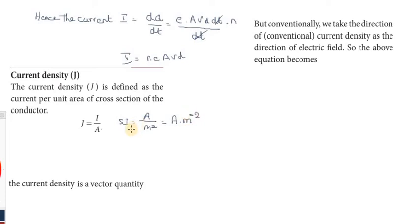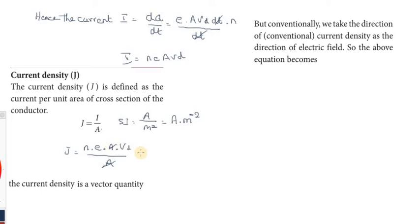Substituting the current value: J equals I divided by A equals n into e into A into vd divided by A. The area A cancels, giving J equals n into e into vd — drift velocity.